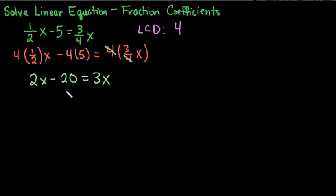So now we would solve this like we have all of the other linear equations. We want to get all of our x terms on one side, so we would subtract 2x from both sides. And when we do this, this is a nice one because it just gives us x equals negative 20.